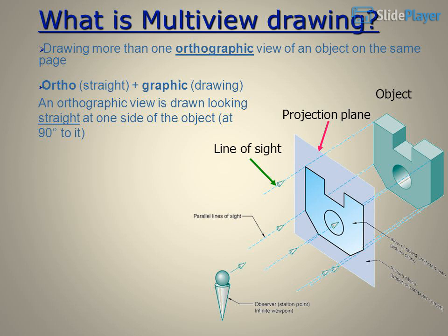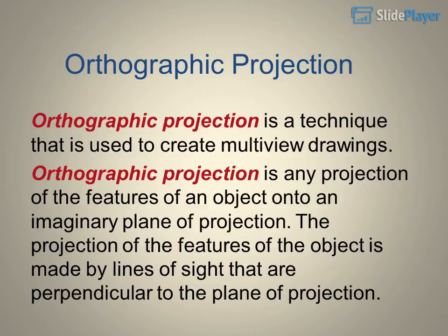An orthographic view is drawn looking straight at one side of the object, at 90 degrees to it. Orthographic projection is a technique used to create multi-view drawings. It is any projection of the features of an object onto an imaginary plane of projection, made by lines of sight that are perpendicular to the plane of projection.